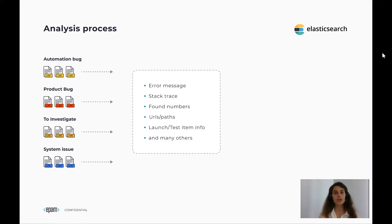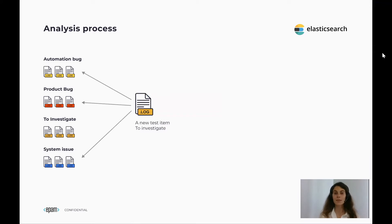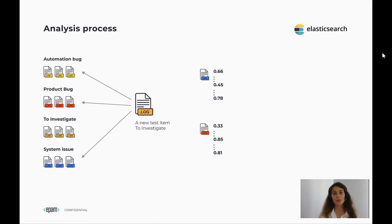We store logs from launches in Elasticsearch, and each log is described by many fields which contain launch test item information as well as extracted useful parts from a log message itself. When a new test item appears, we search for logs similar to it, and these logs become the candidates for our algorithm. After that, we regroup them by their issue types and calculate features based on the group itself and the best representative from it.